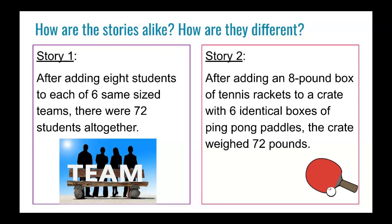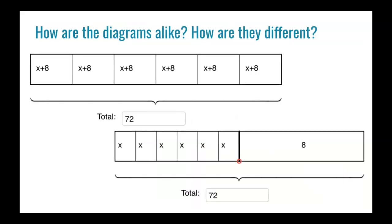we're going to look at some diagrams and I want you to think about which one matches each situation. So here's the two diagrams. One goes with each of the stories. So how are these diagrams alike and how are they different? Again, you're probably going to notice they all have like 6 x's, they have 8's in them, they have a total of 72.